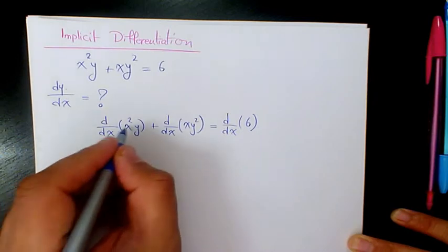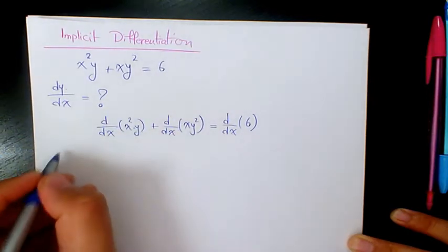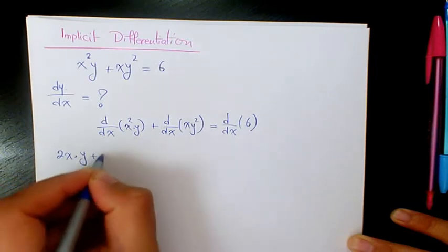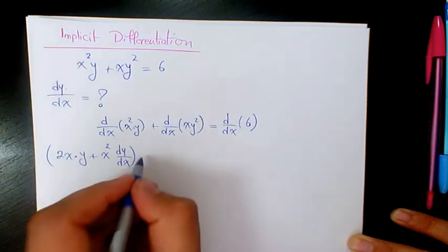The first one is going to be the product rule, so it's going to be 2x times y plus x squared dy over dx. That's the first one.